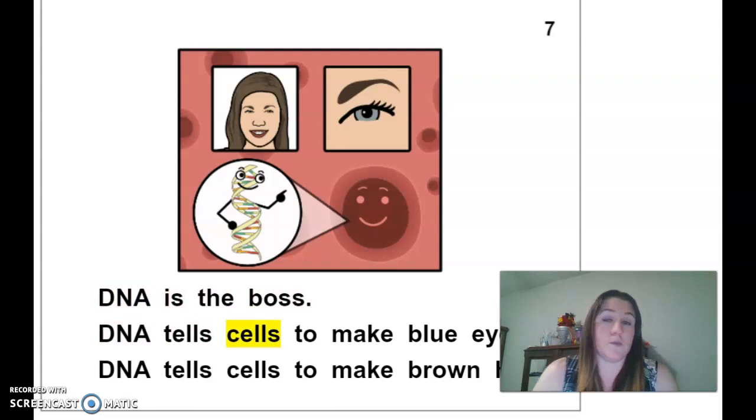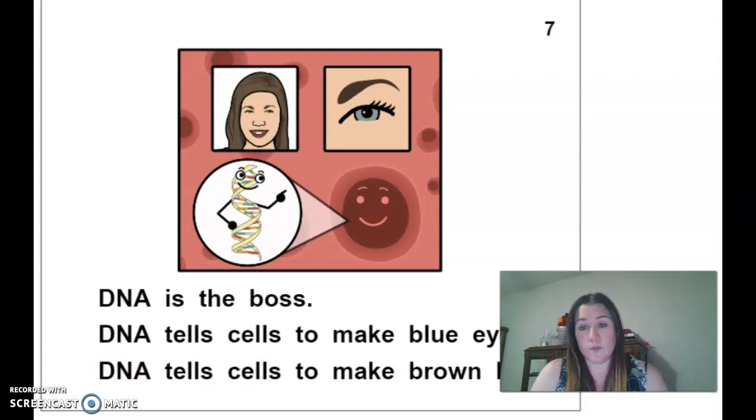DNA tells cells to make blue eyes. DNA tells cells to make brown hair. So DNA is one of the reasons none of us look the same.